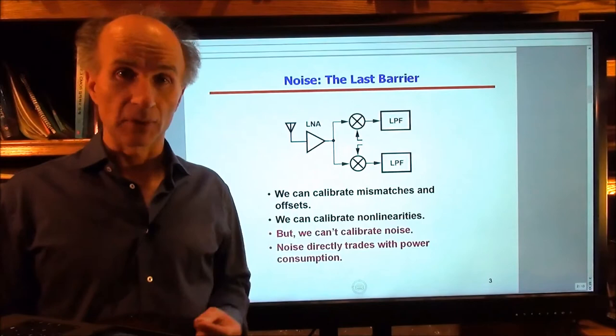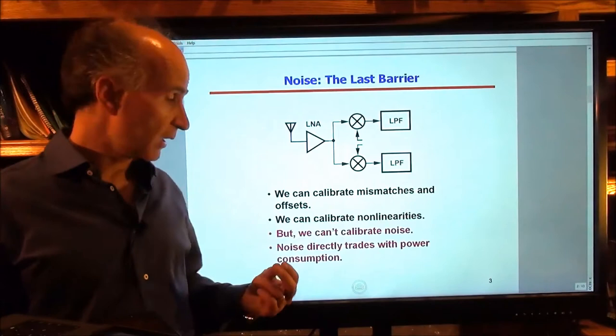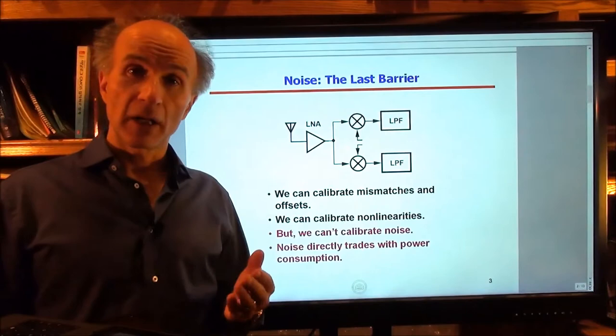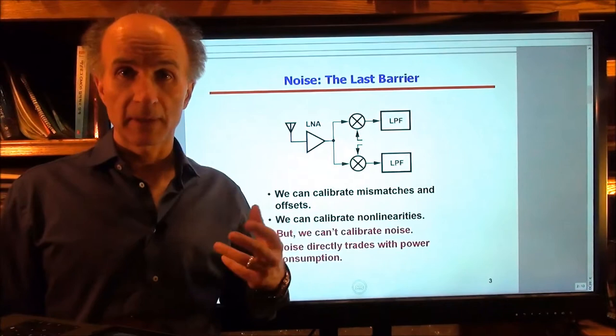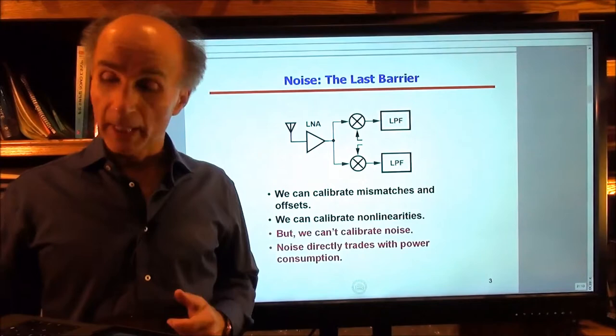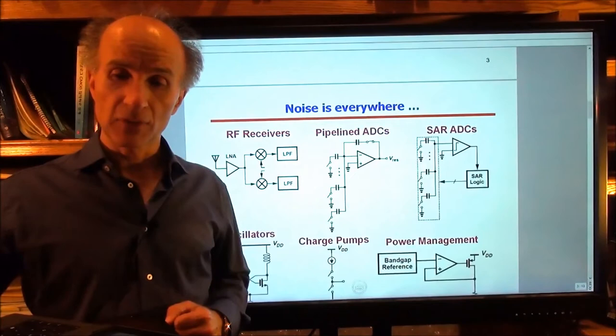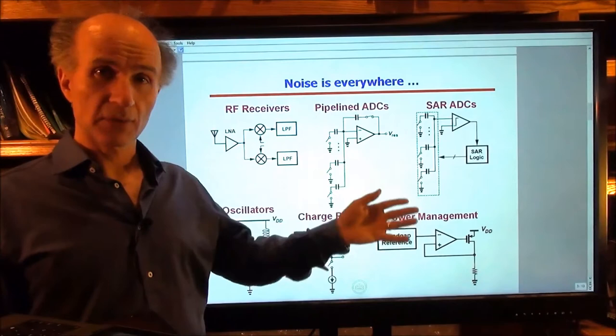A critical problem is that there is always a trade-off between noise and power consumption. We could design circuits with extremely low power consumption if we had no noise, but noise puts a lower bound on the power consumption that we will have. The trouble with noise is that it is everywhere — if we look at pretty much any circuit today, from RF receivers to pipeline A2Ds to other systems, we have noise.